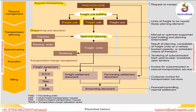We are now reaching the second block, which we call dispatching and execution, or transportation planning and execution. Through the optimizer planning or through manual planning, we create a freight order. The freight order basically contains all the requirements — what goods are to be transported, when they are to be transported, and from which location.